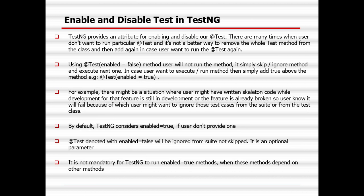TestNG provides attributes for enabling and disabling the @Test annotation. Whenever you are using @Test, this is counted as a particular test script. When TestNG runs the tests, it counts how many @Test annotations there are, and based on that it will provide you the total number of tests executed and the pass, fail, and skip count.